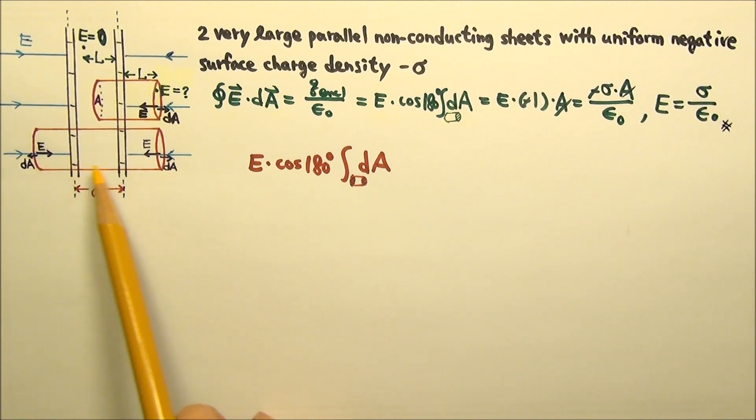We would have non-zero flux through both ends of the Gaussian surface. By symmetry, E would have the same magnitude on both ends. And with enclosed charge being negative,